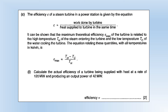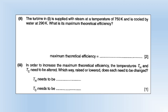The efficiency of a steam turbine in a power station is the work done by the turbine divided by the heat supplied to it in the same time. It can be shown that the maximum theoretical efficiency relates to the temperature of the steam going in and the temperature of the cooling water. For a turbine supplied with heat at 120 megawatts and producing output power of 42 megawatts, its efficiency is simply 42 over 120, which is 0.35. With steam at 750 Kelvin and cooling water at 290 Kelvin, the maximum theoretical efficiency works out to 0.61, or about 60% — a very typical efficiency for a power plant.